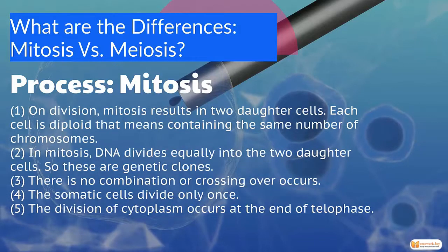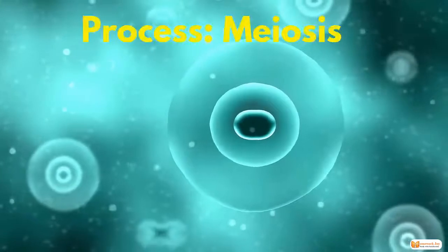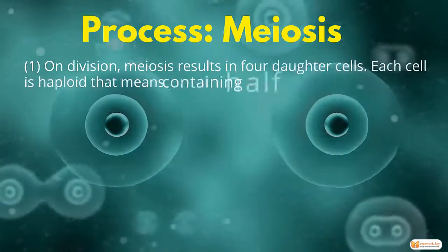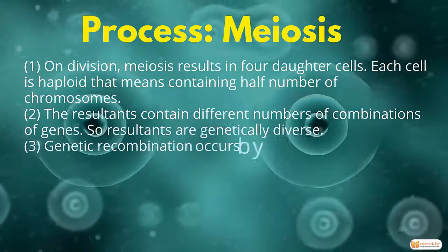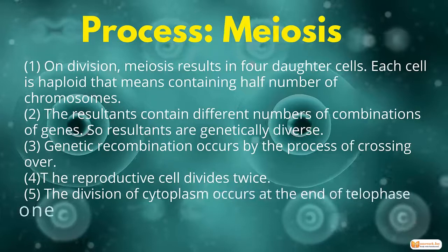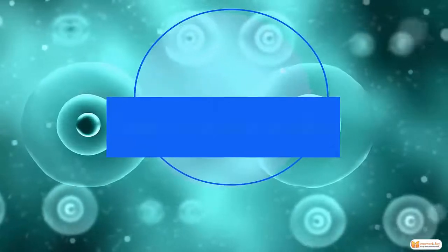In meiosis, division results in four daughter cells. Each cell is haploid, containing half the number of chromosomes. The resulting cells contain different combinations of genes — they are not genetic clones. Genetic recombination occurs through the process of crossing over, and the cell divides twice, with cytoplasm division occurring at the end of telophase 1 and telophase 2.